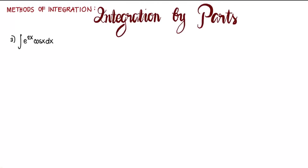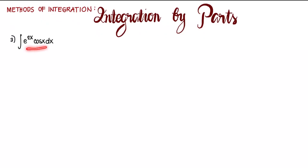For this video, we are going to solve another example of evaluating an integral using integration by parts. We are going to evaluate the integral of e to the power of 2x cosine x dx. We can see that this integral — the integrand — is a product between an exponential function and a trigonometric function.